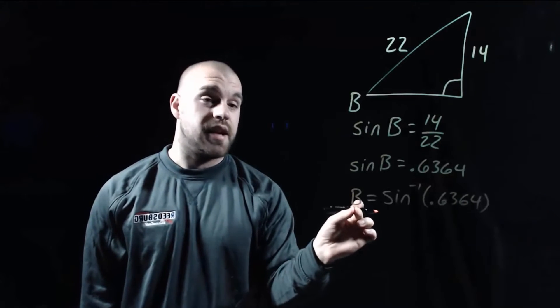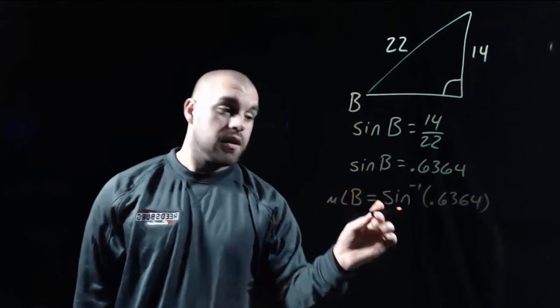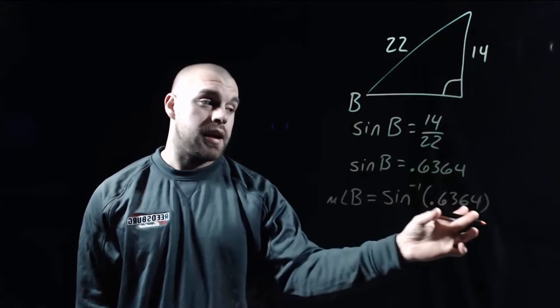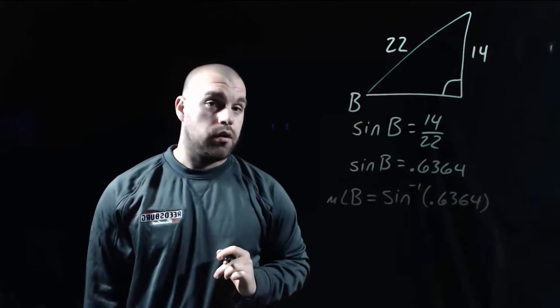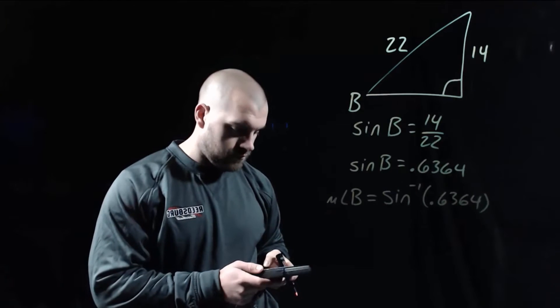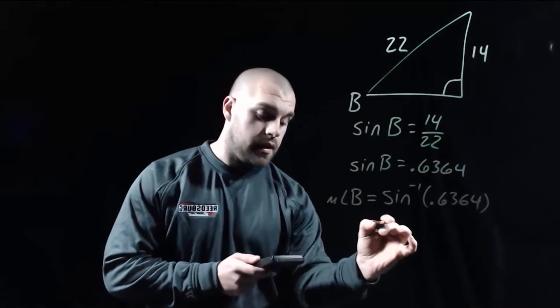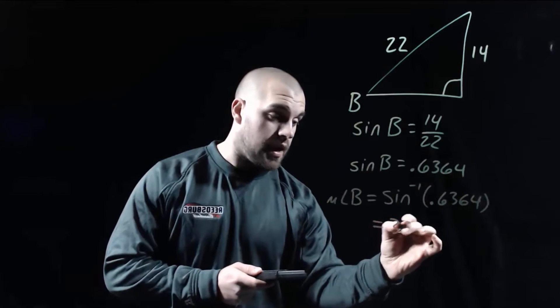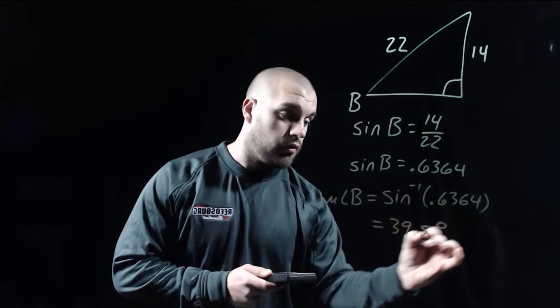So our inverse sine equation says that the measure of angle B is equal to the inverse sine of that decimal that we got earlier. Now, if we type this into our calculator, we end up with the measure of angle B as about 39.5 degrees.